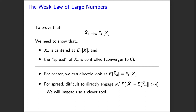To prove that the sample mean converges in probability to the population mean, we need to do two things. First, we need to show the sample mean is centered in the right place — centered at the population mean. Second, we need to show that the spread of the sampling distribution of the sample mean is controlled, and in particular that it converges to zero as n increases.